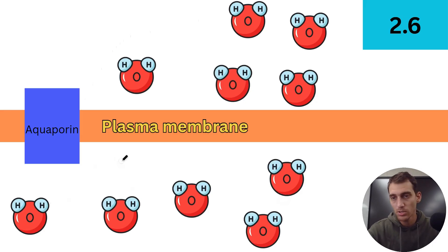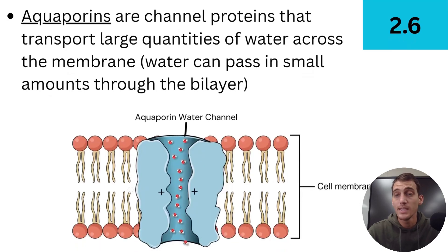And the name of the channel protein has a special name. The name of the channel protein that allows the diffusion of water osmosis in large amounts is what's called an aquaporin over here. So this blue rectangle, I know geometry, is over here. It's called an aquaporin and its job is to facilitate the diffusion of water. So here it is. It's a channel protein that transports large quantities of water. That's key right there. Large quantities of water across the membrane because water can pass through the bilayer in very small amounts because it's such a small molecule.